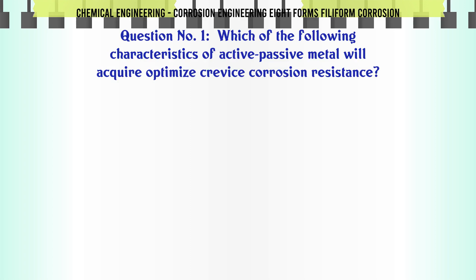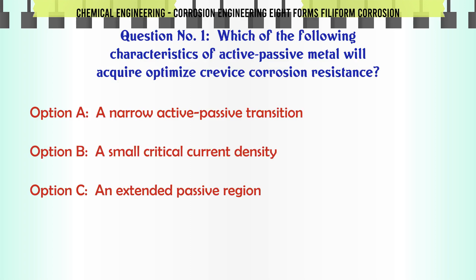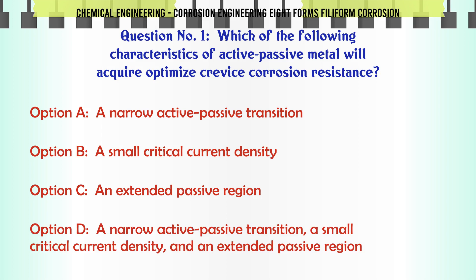Which of the following characteristics of active-passive metal will acquire optimized crevice corrosion resistance? a. A narrow active-passive transition. b. A small critical current density. c. An extended passive region. d. A narrow active-passive transition, a small critical current density, and an extended passive region.